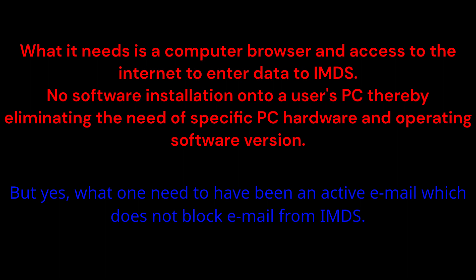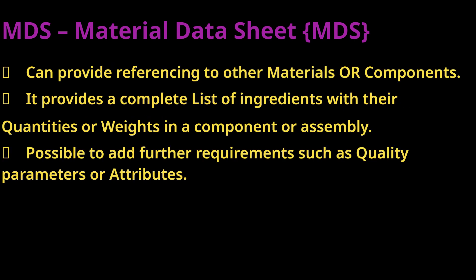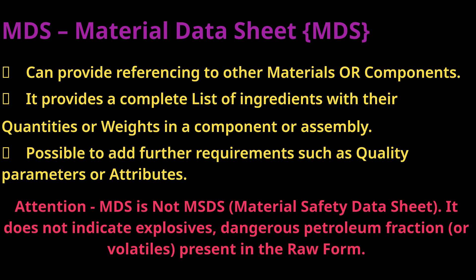One does need an active email account that does not block emails from IMDS. The Material Data Sheet, or MDS, is the heart of IMDS. MDS is used to transfer material information from suppliers to customers. MDS is like a container holding assemblies, components, materials, and substances — an organized list with all desired information such as specific names, part numbers, norms, standards, and weights. MDS can provide referencing to other materials or components and provides a complete list of ingredients with their quantities or weights in a component or assembly.